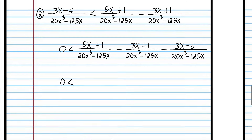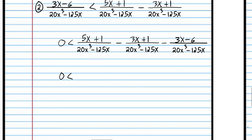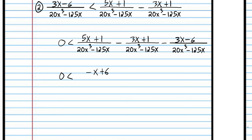That is step one of solving an inequality with rational expressions. Now we're going to combine everything to one fraction — be very careful here. These are both positive terms but because we're subtracting the fraction they're both going to become negative. So we have 5x minus 3x is 2x, and then 2x minus 3x is negative x. One minus one is zero, and over here we're subtracting negative six, so that would be positive six — zero minus negative six is positive six.